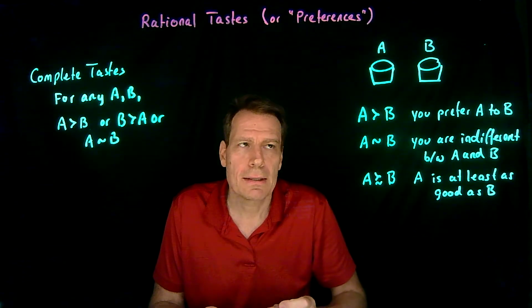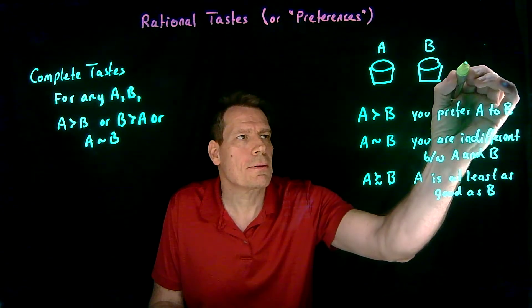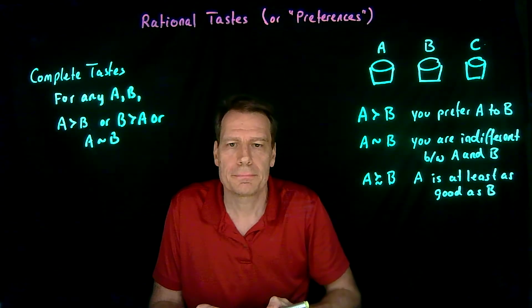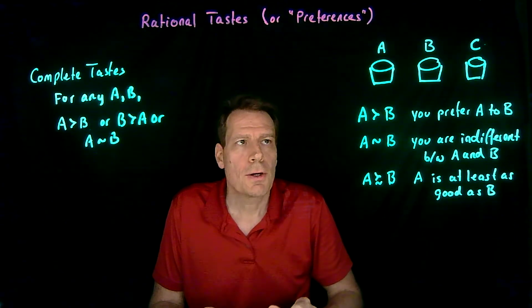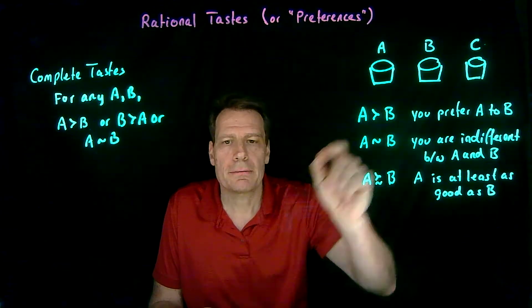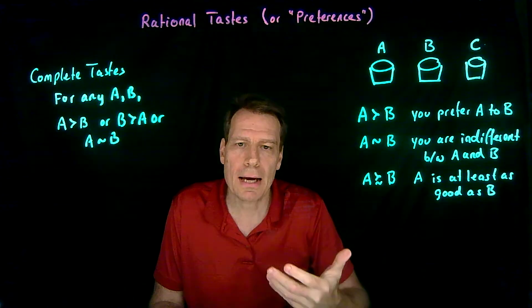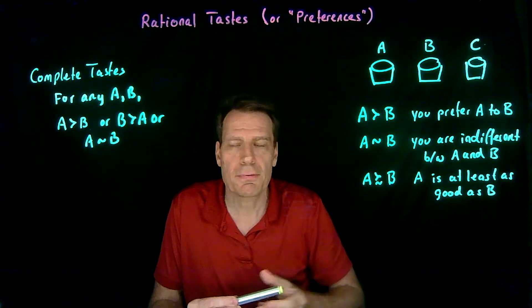The second assumption we're going to make is that if you have three baskets, so we'll add a third basket here, call that basket C, there's a certain consistency to your tastes. So that if you prefer A to B and you prefer B to C, that should imply that you also prefer A to C. So let me write that down.